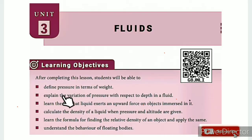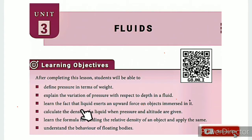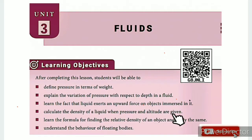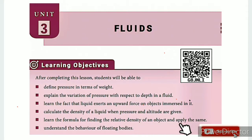In this lesson, the learning objectives are: define pressure in terms of weight; explain the variation of pressure with respect to depth in a fluid; learn that liquid exerts an upward force on objects immersed in it; calculate the density of liquid when pressure and altitude are given; learn the formula for finding the relative density of an object and apply it; understand the behavior of floating bodies.